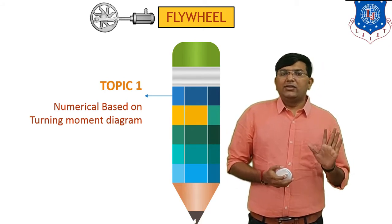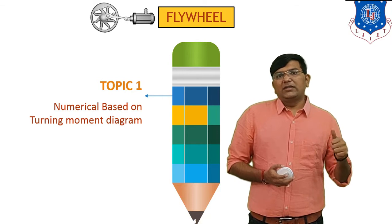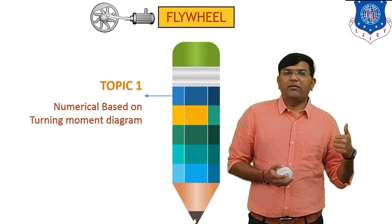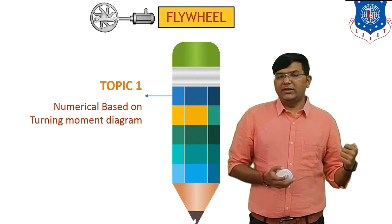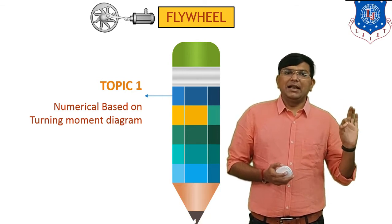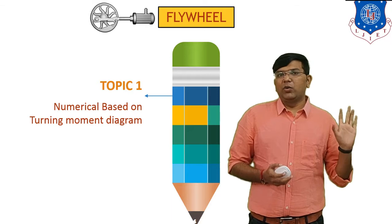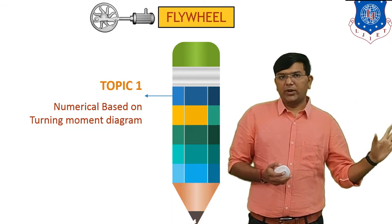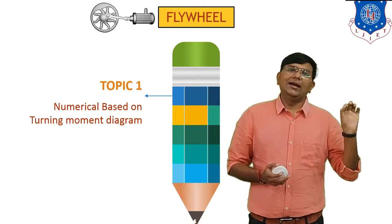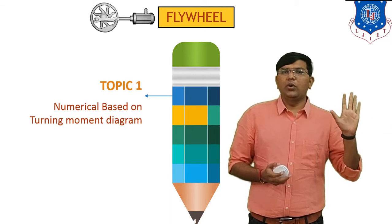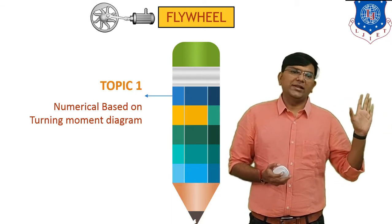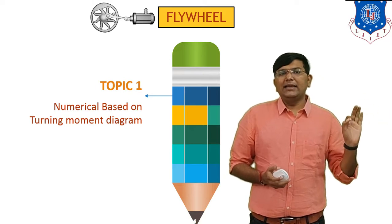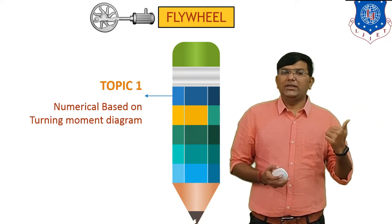As you all know, there are three equations for the maximum fluctuation of energy. That is: delta E equals I·omega·(omega1 minus omega2); delta E equals I·omega²·Cs; and delta E equals 2·E·Cs.